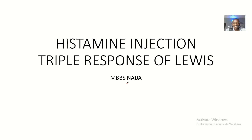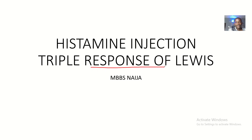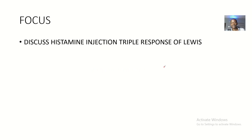Briefly, we'll be looking at histamine injection — basically the triple response of Lewis. I'll be looking at the brief things that actually occur when you inject histamine into an individual. That's the histamine injection triple response of Lewis — the things that occur one after the other when you inject histamine into an individual.